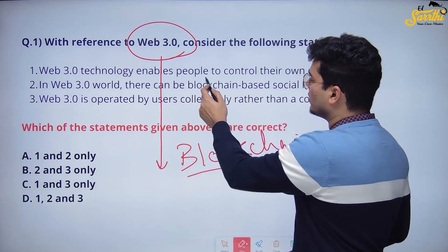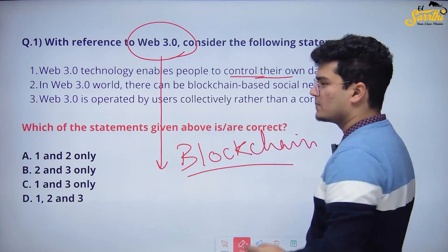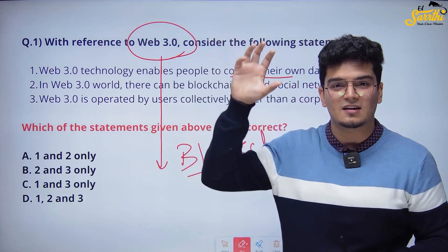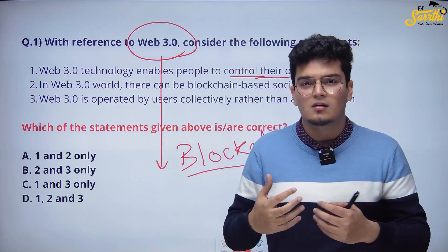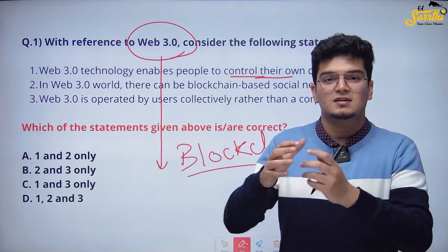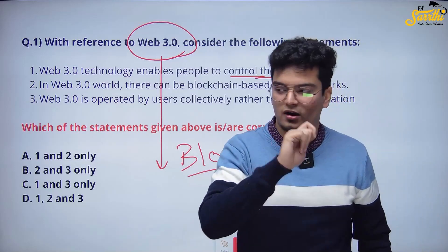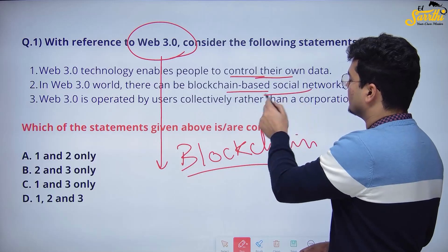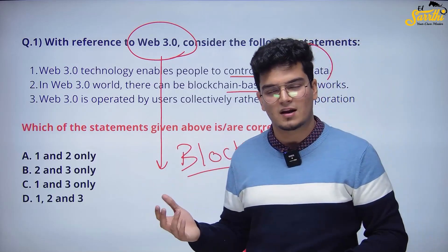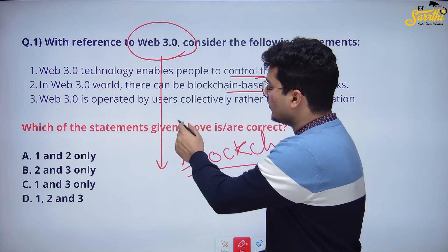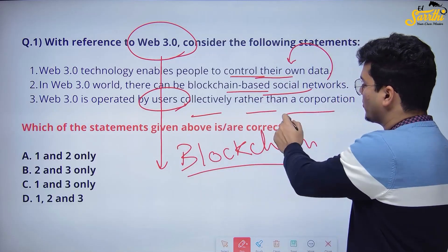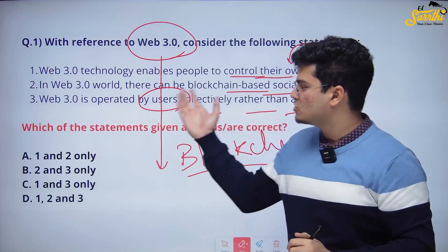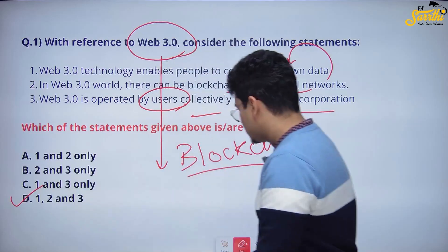Let's read the options. Web 3.0 enables people to control their own data. Blockchain essentially is a decentralized network — there is no one centralized system like Google, Apple, Facebook, or Meta controlling your data. Your data is decentralized, so in your control. Second option: in a Web 3.0 world there can be blockchain-based social networks — obviously correct and related to statement 1. Third: Web 3.0 is operated by users collectively rather than a corporation. Again, decentralized usage, no central controlling authority. So all three statements are correct and the answer is D.